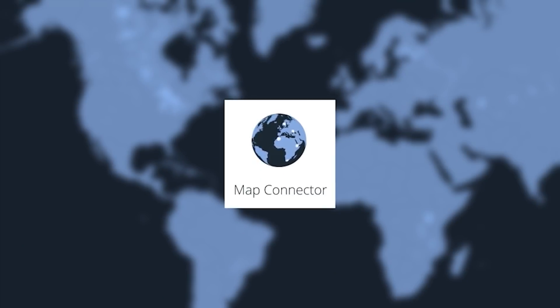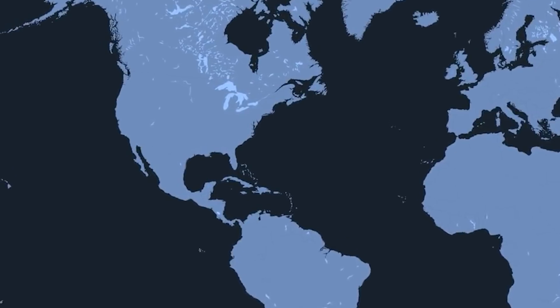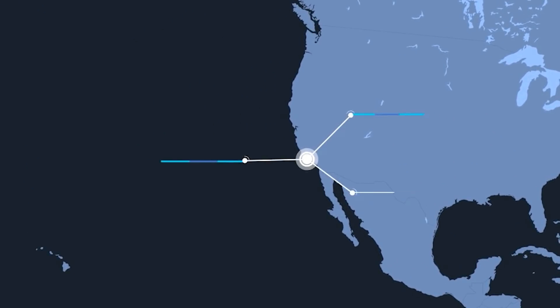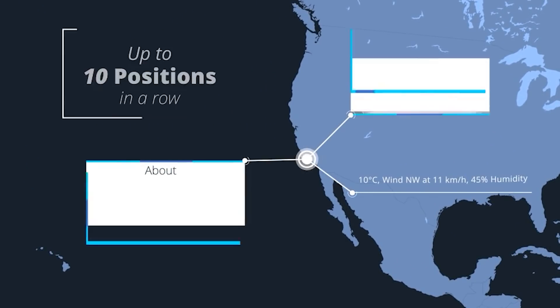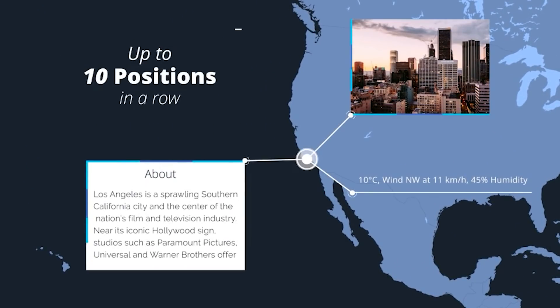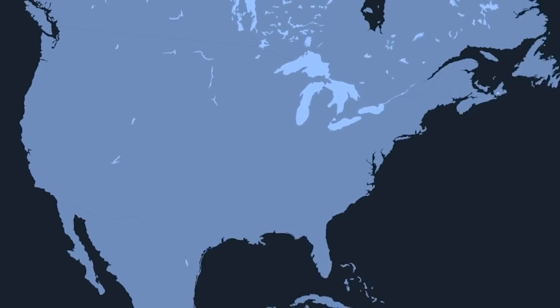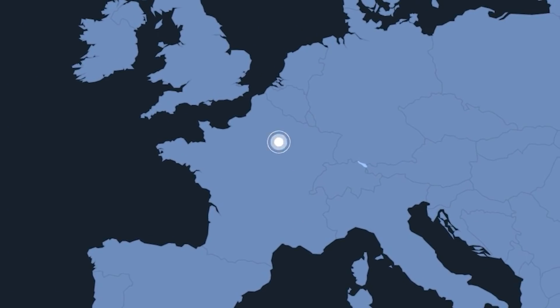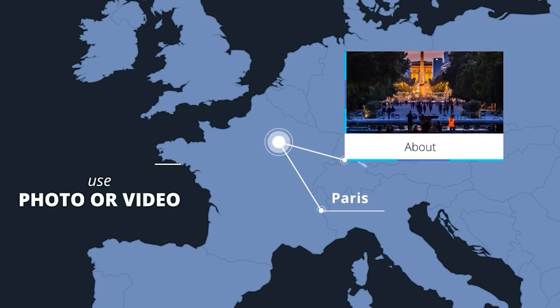Now it's on to the Map Connector. Map Connector is a great 2D template to show metadata or more info about different locations, but it's not good for connecting to different cities — it's really just great to show different cities and have information pop up.